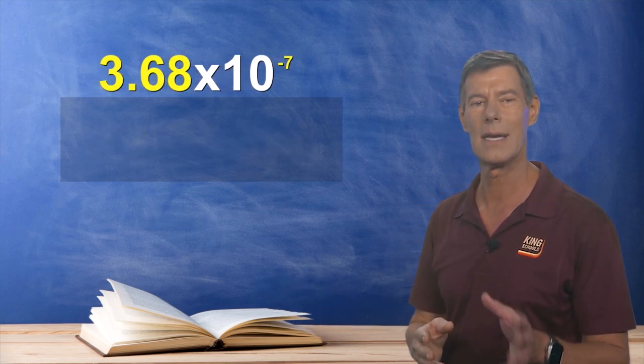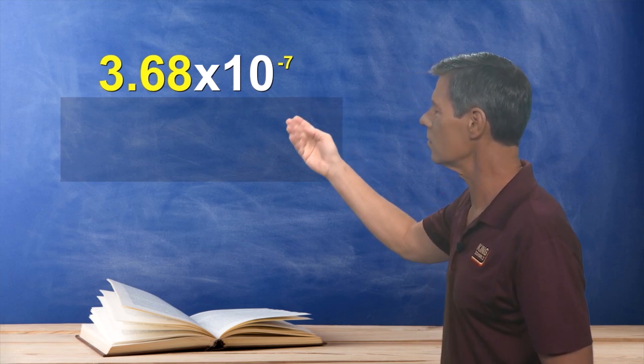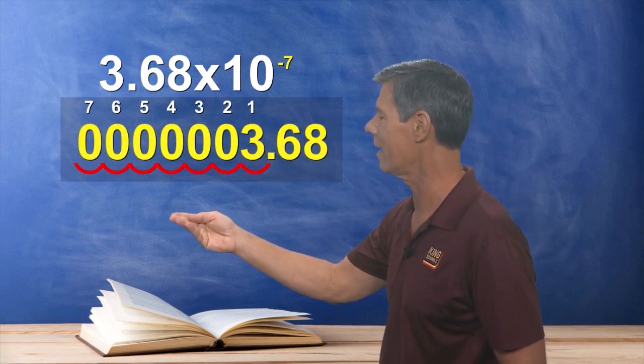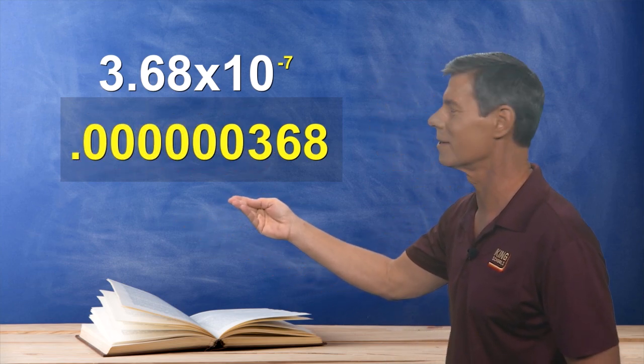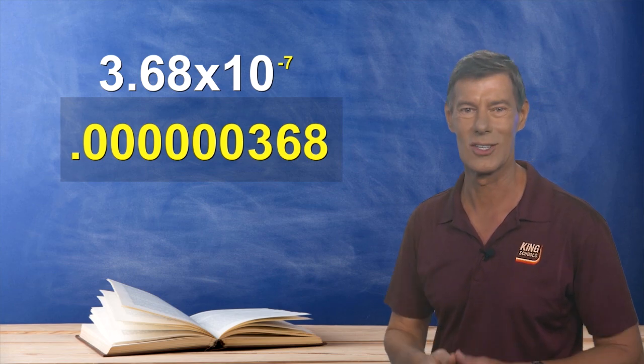And this is just as easy, by the way, if you have a negative sign in front of the power. Instead of moving the decimal point to the right, we simply move the decimal point to the left. And that gives us this really small number in standard notation. You see? Nothing to it.